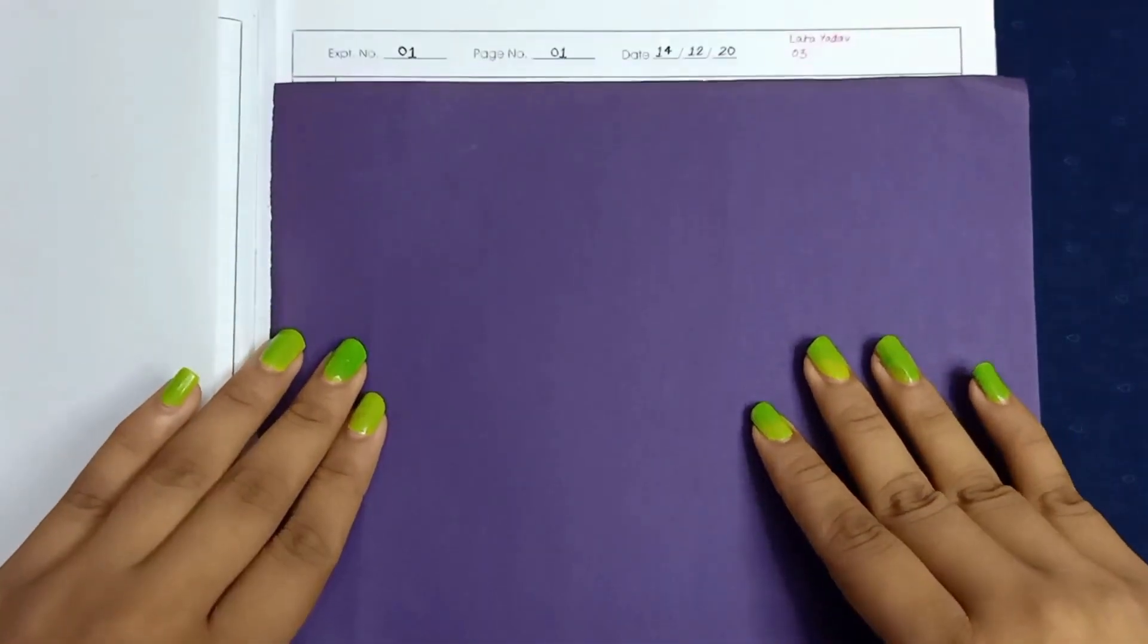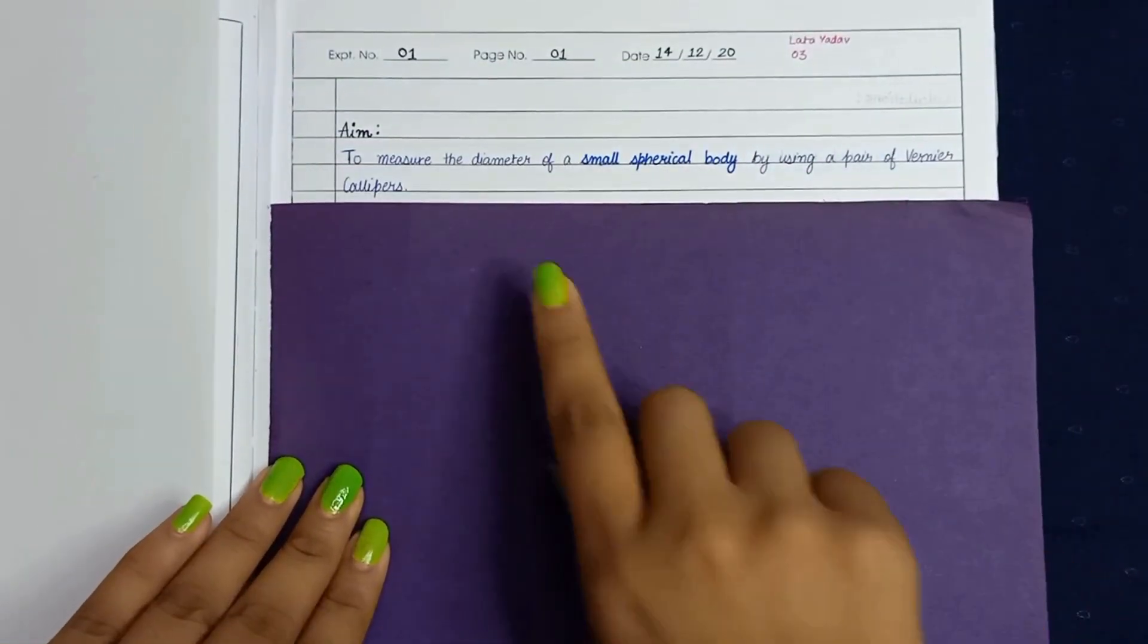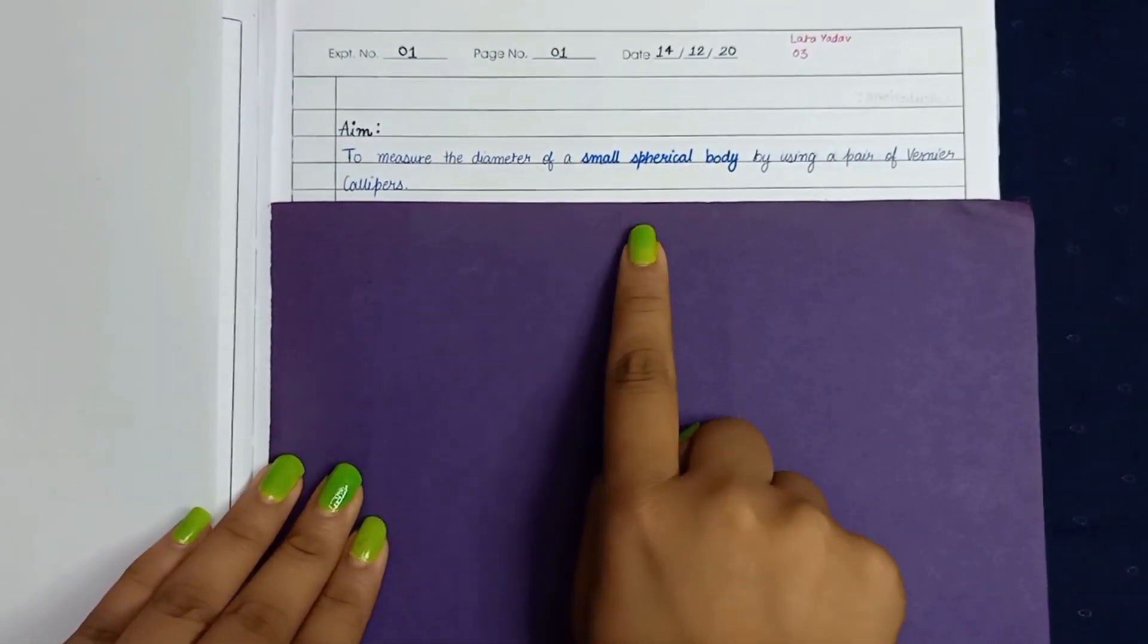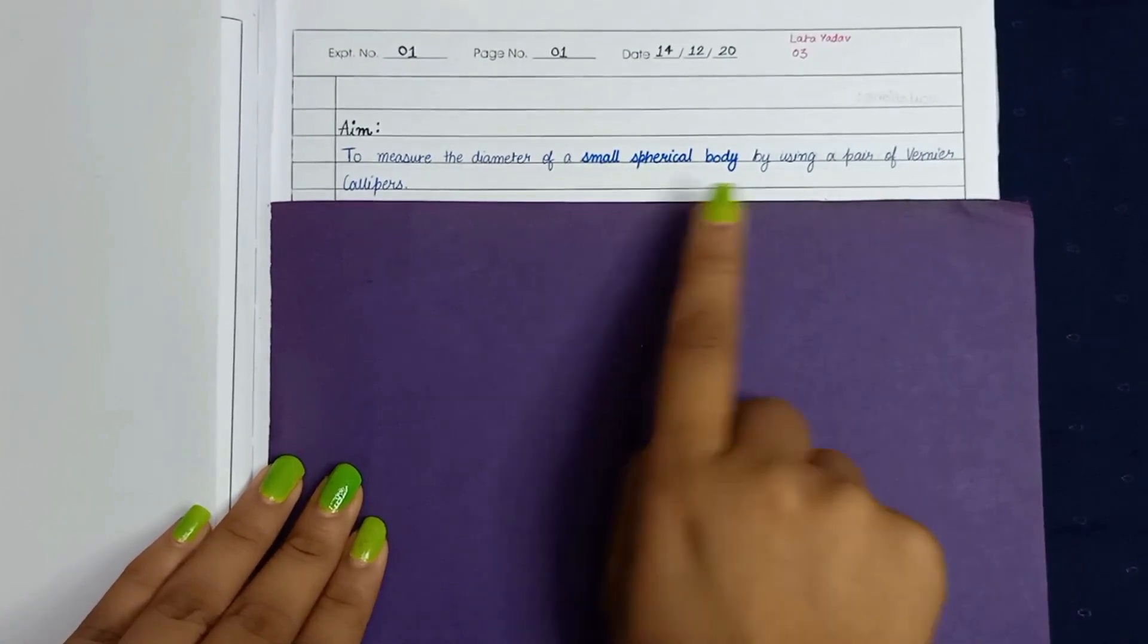Hello guys, welcome back to my YouTube channel. Today we are going to discuss this experiment called to measure the diameter of a small spherical body by using a pair of vernier calipers.